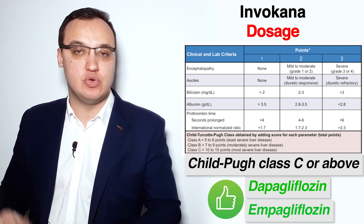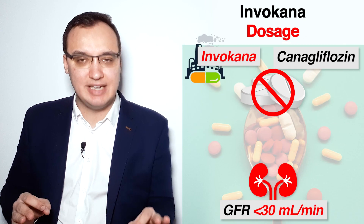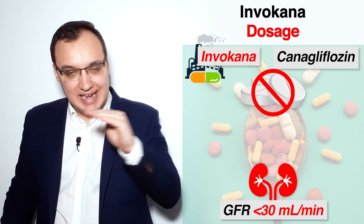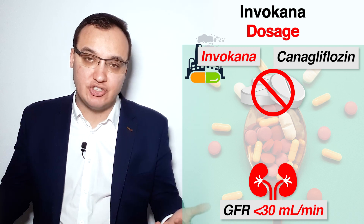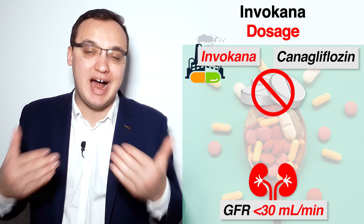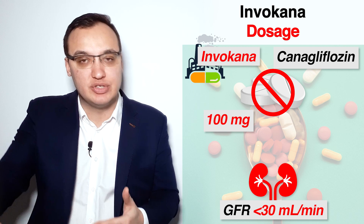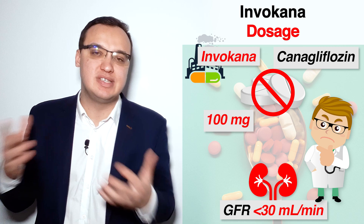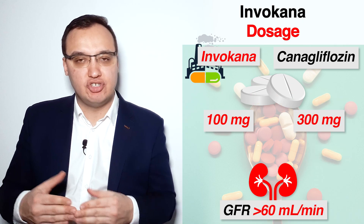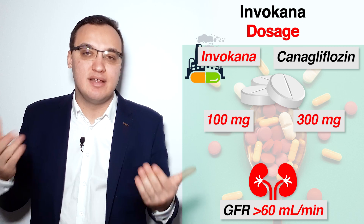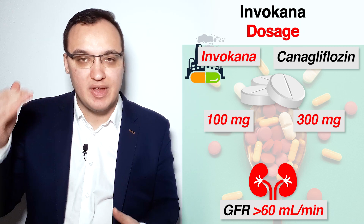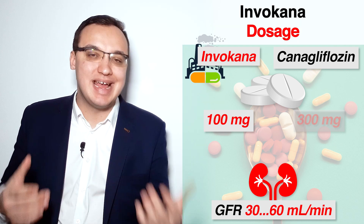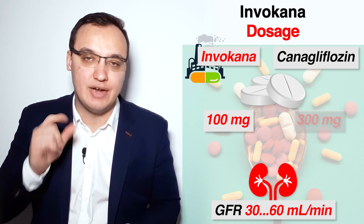It is also not recommended to start Canagliflozin in patients with severe kidney insufficiency with a GFR of less than 30 ml per minute. But if the patient is already taking 100 mg once daily, it can be continued for some patients at the doctor's discretion. When the GFR is more than 60 ml per minute, we can give the maximum dose of 300 mg. When the GFR is between 30 to 60 ml per minute, it is recommended to give only 100 mg once daily.